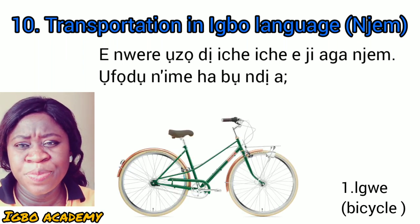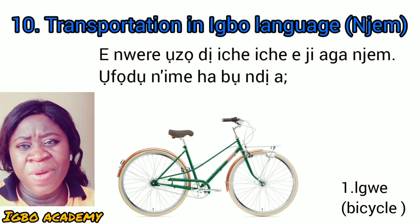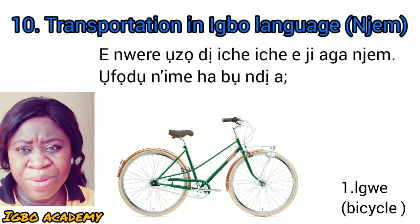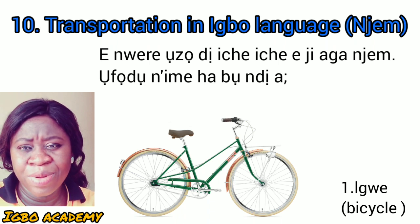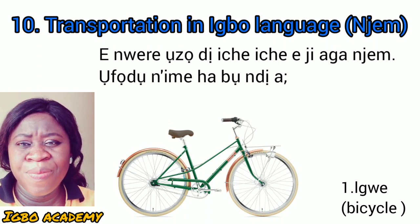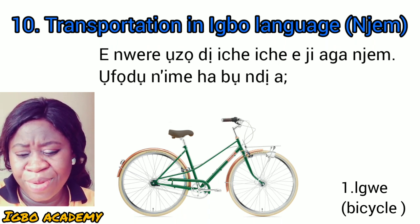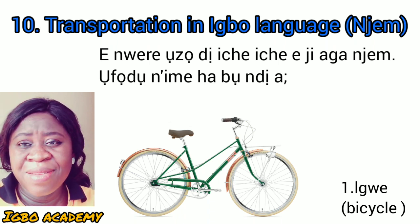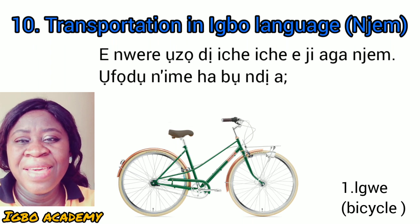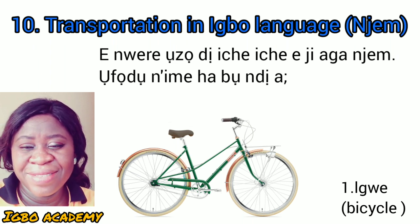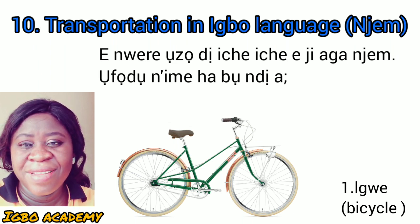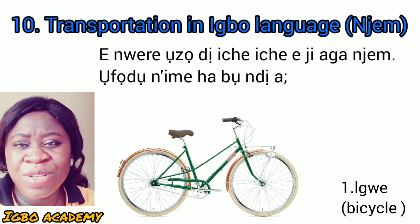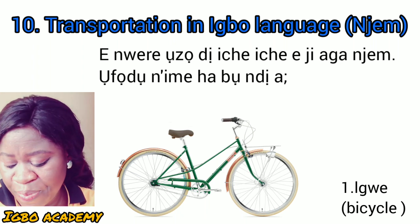Number one, we have the bicycle. The bicycle is called Igwe.